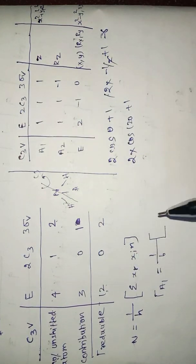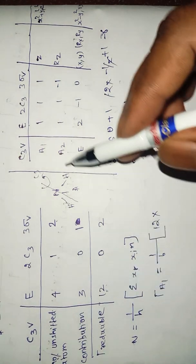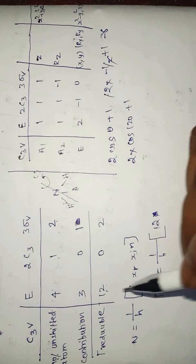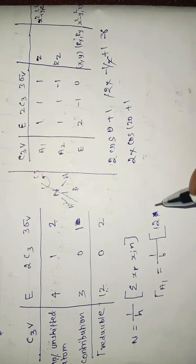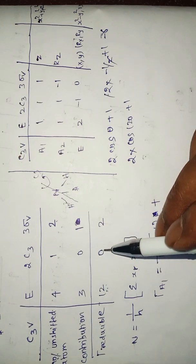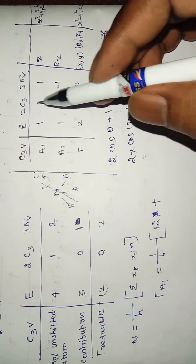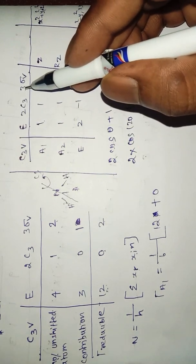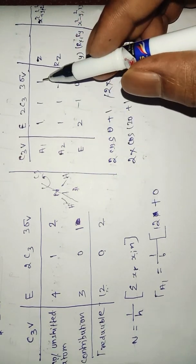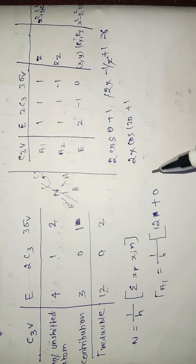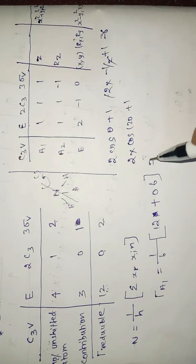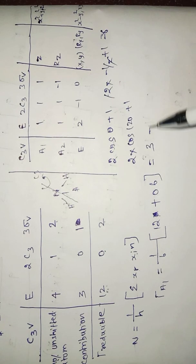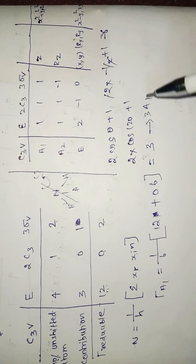Using the reduction formula with 1/6 (the order of C3V is 6): for A1, we calculate (1/6)[12×1×1 + 2×1×0 + 3×2×1×3] = 18/6 = 3. So we get 3A1.